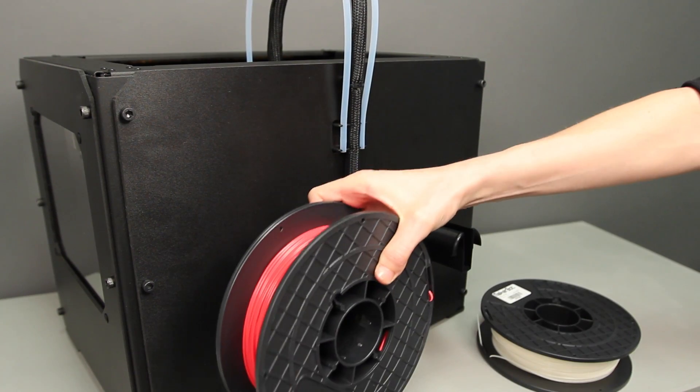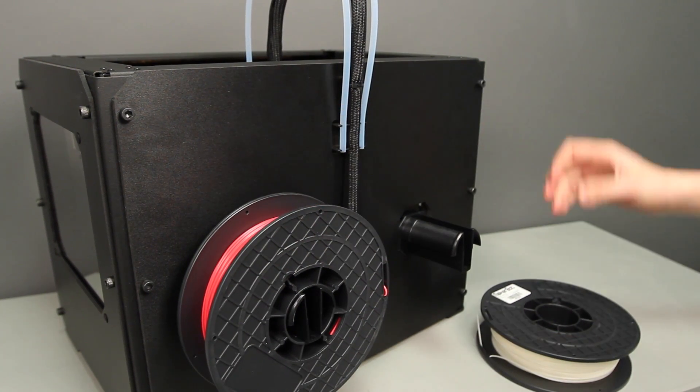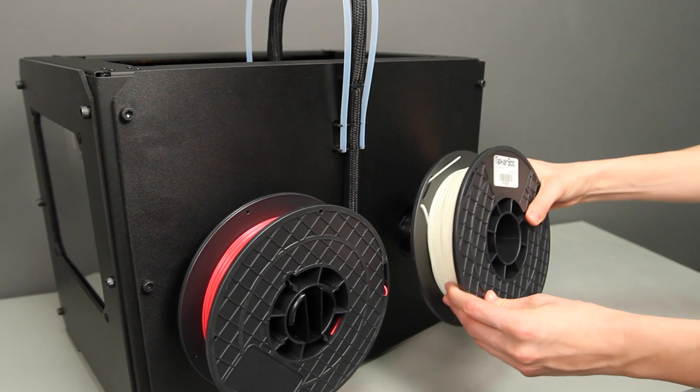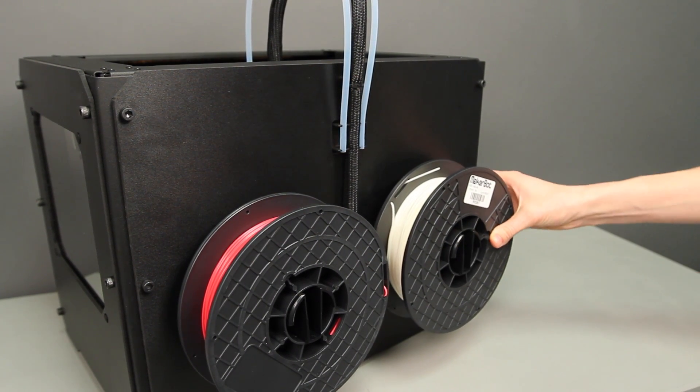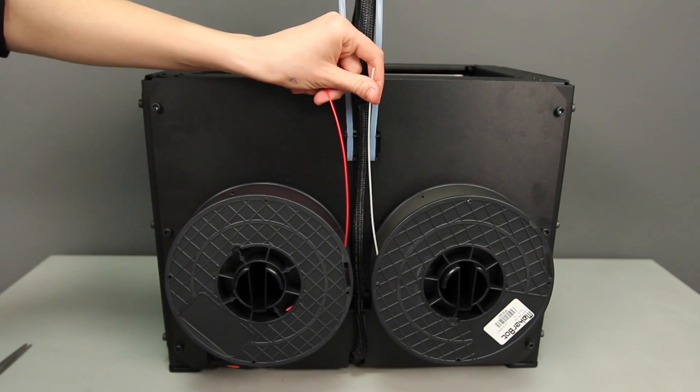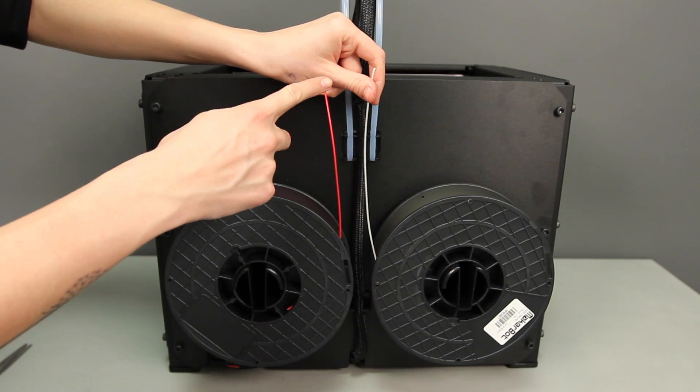Now let's place some MakerBot ABS filament on the back of your machine. Take each spool out of its box and bag and push them onto the spool holders. You might need to squeeze the spool holder to get the spools all the way on, but when you do they should lock into place. Make sure that the spools are mounted so that they both feed up from the center like this.